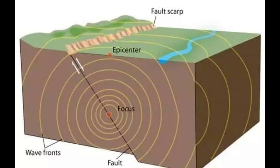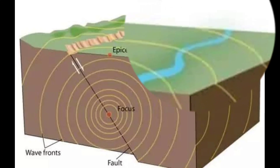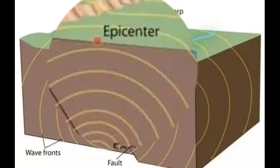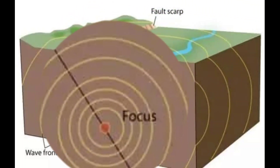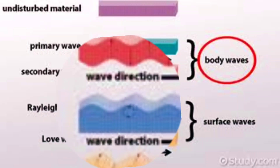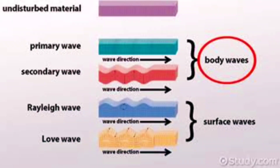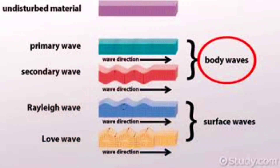Now let us discuss the hypocenter and epicenter. The hypocenter is the source of energy transfer — the point which transfers energy to the surface. The epicenter is the point on the surface directly above the hypocenter that receives that energy.